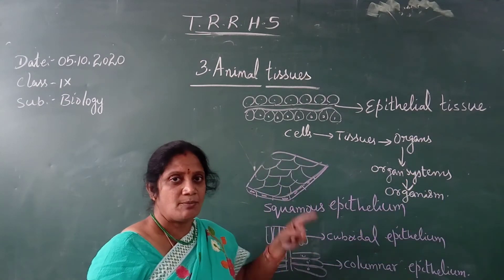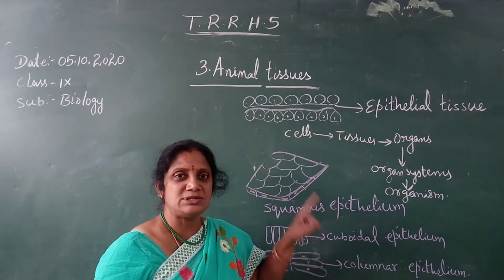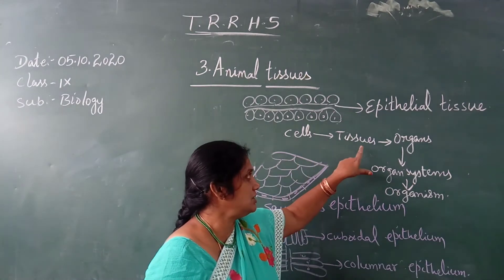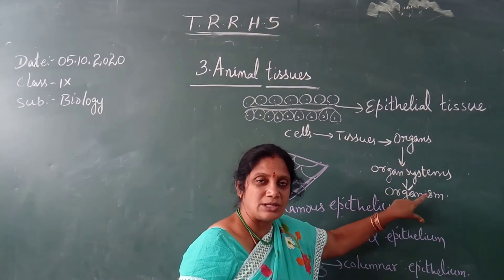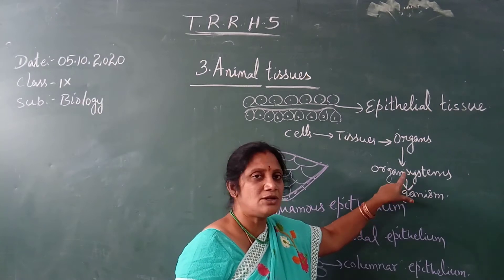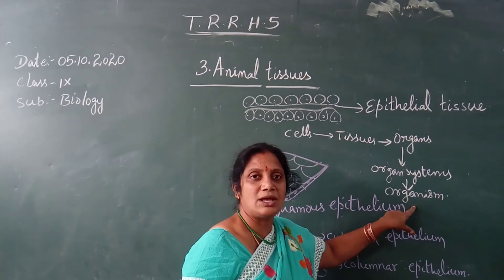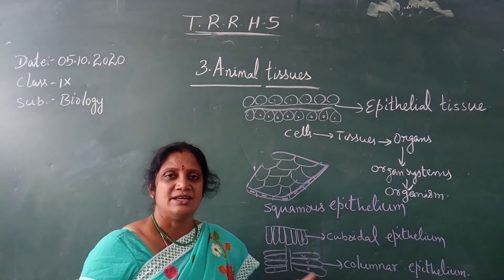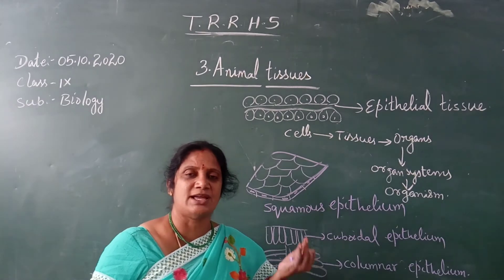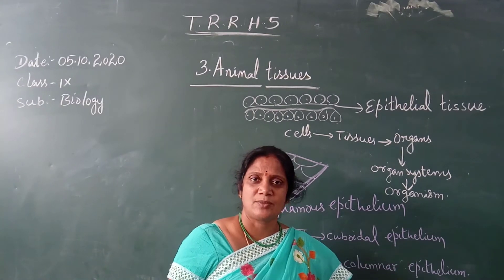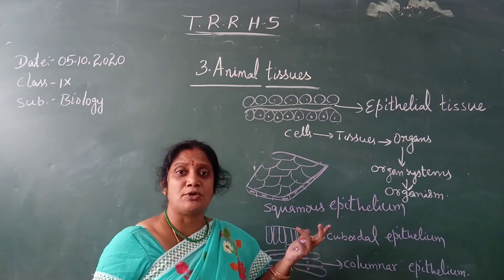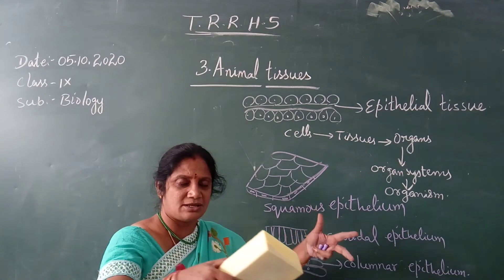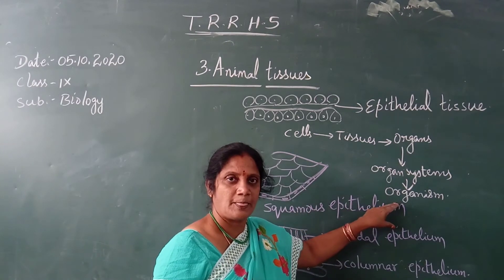The group of cells forms tissues. Tissues form organs. Organs form organ systems. The combination of organ systems is the organism itself. In our body there are many organ systems: the respiratory system, digestive system, excretory system, nervous system, and reproductive system, among others.